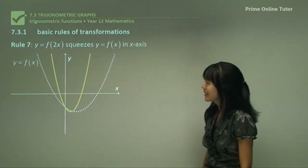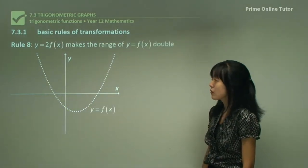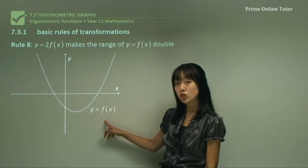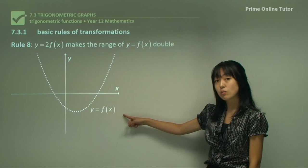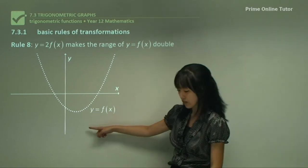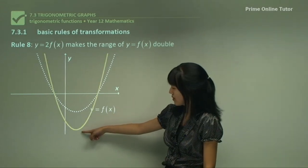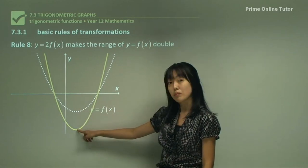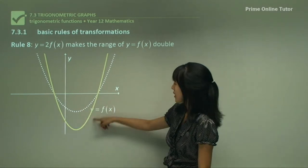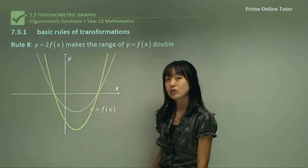And finally, we have rule eight. What would happen if you multiplied the f of x by 2? What would happen is the range of the f of x would be doubled. The y value, it would start lower, because if this was, for example, one, this would be negative one, this would be negative two. And the range would be doubled.